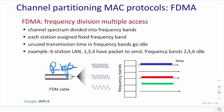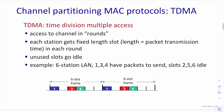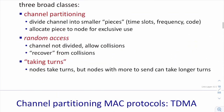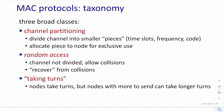TDMA and FDMA are simple and easy to use, but we need a coordinator to divide the frequency spectrum and synchronize clocks and transmission sequences. We can also divide the channel using code division, which will be discussed next chapter. This class of MAC protocol — channel partitioning — allocates pieces of the channel to nodes for exclusive use, but requires a coordinator.